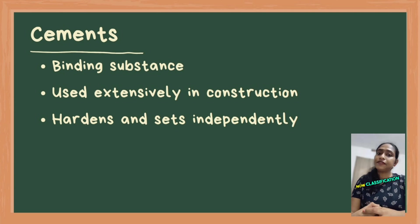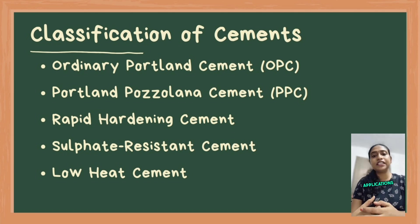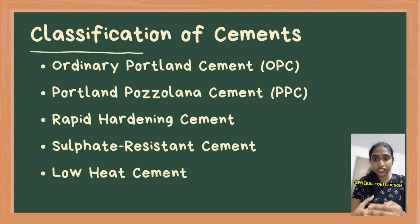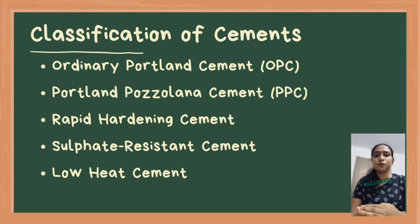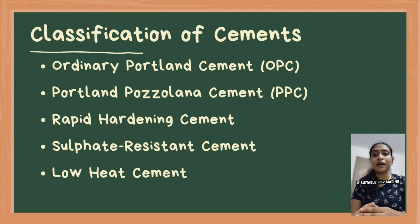Now, classification of cement. Cement can be classified into several types based on its composition and specific applications. There is ordinary Portland cement, or OPC — a common type used widely for general construction. Portland pozzolana cement, PPC, includes pozzolanic materials like fly ash which enhance its durability in aggressive environments, making it suitable for marine structures and mass concreting.